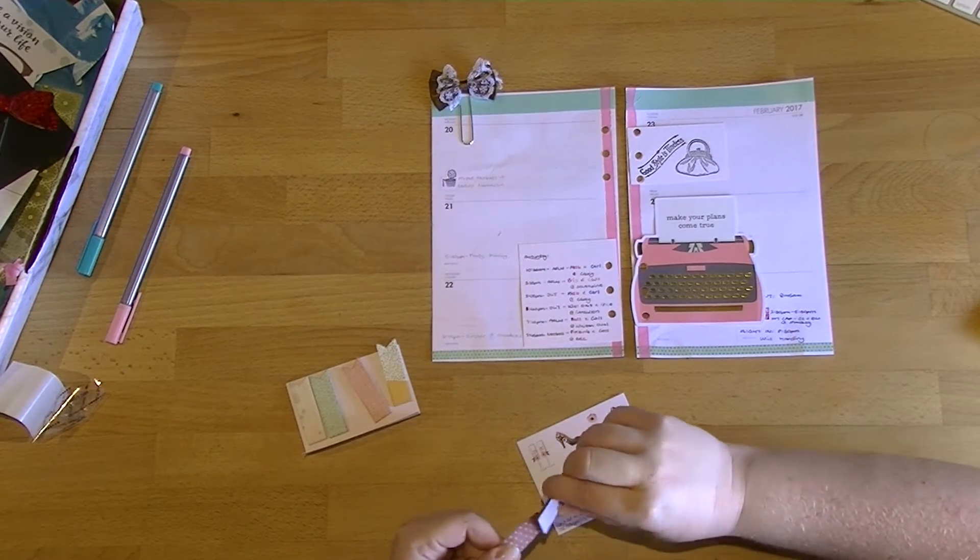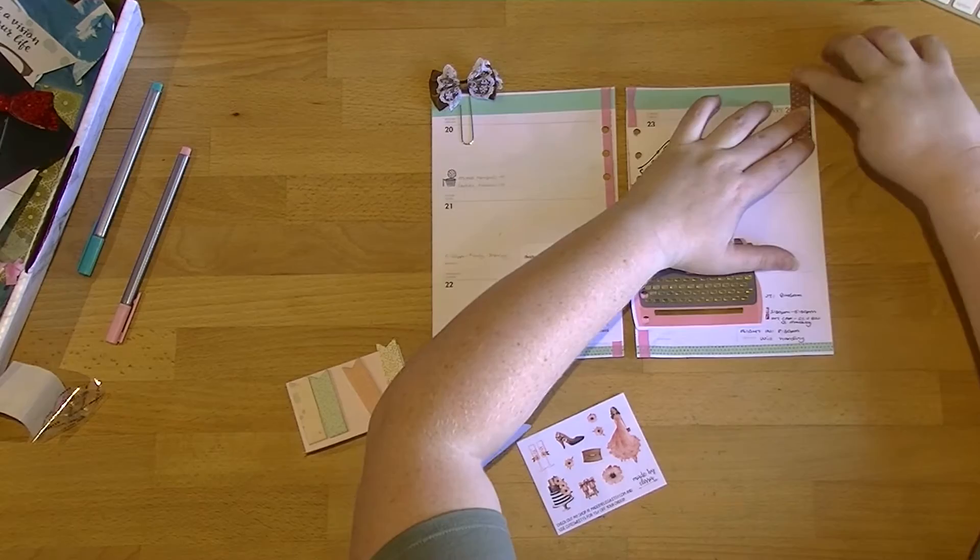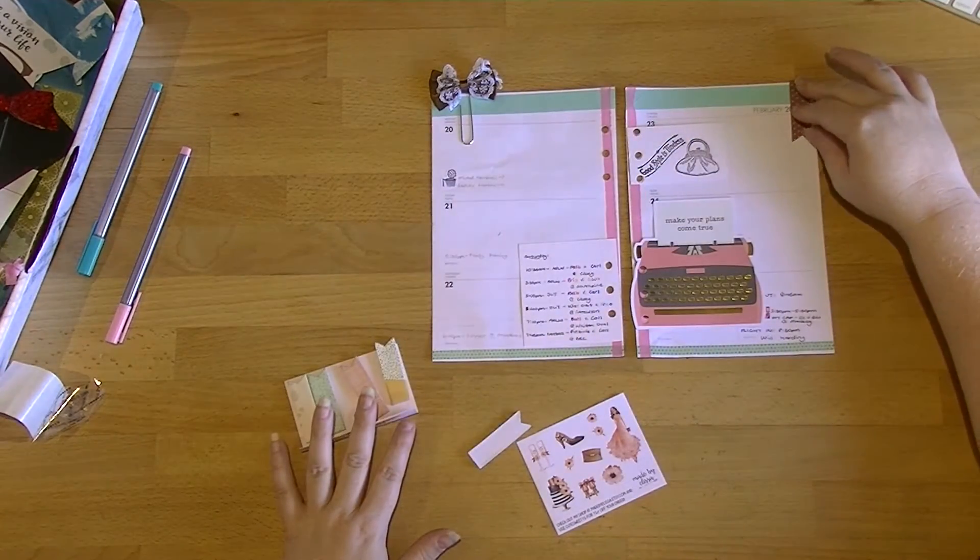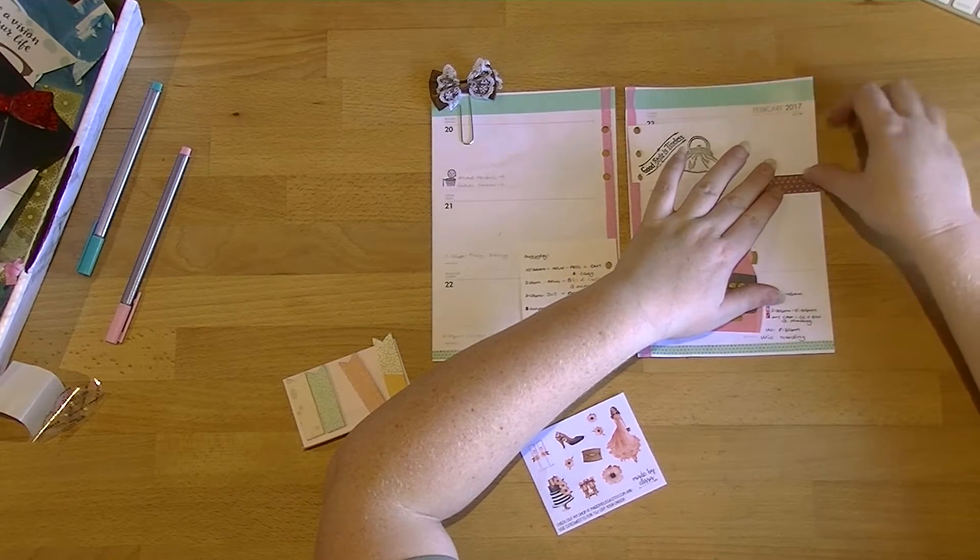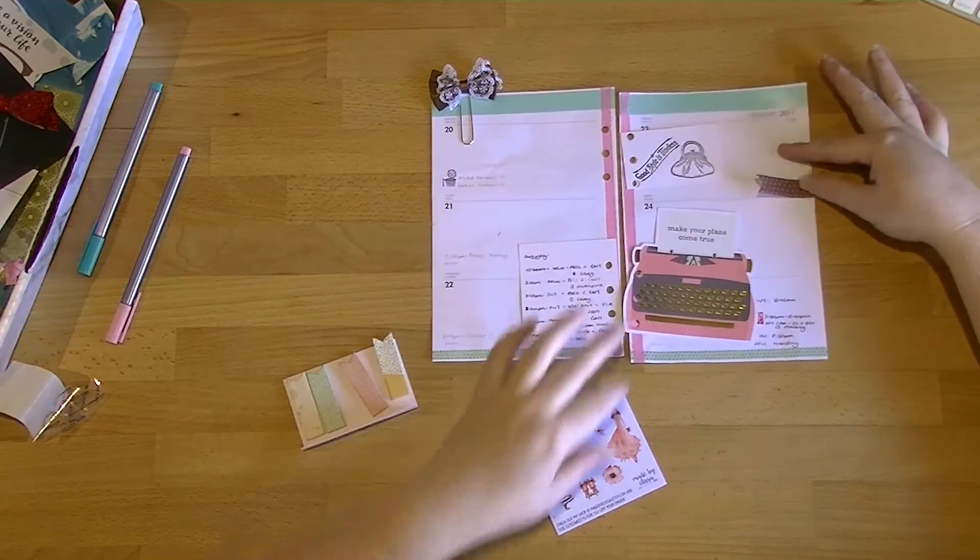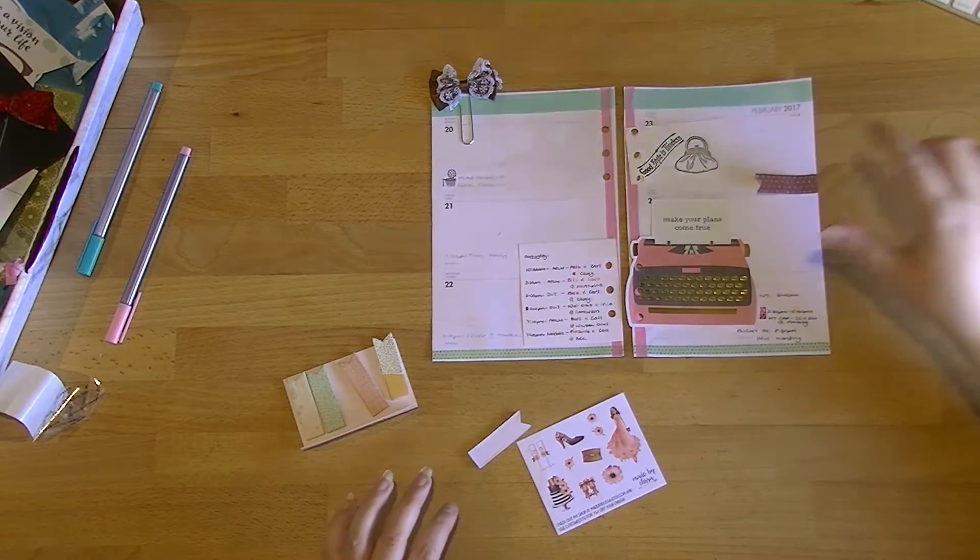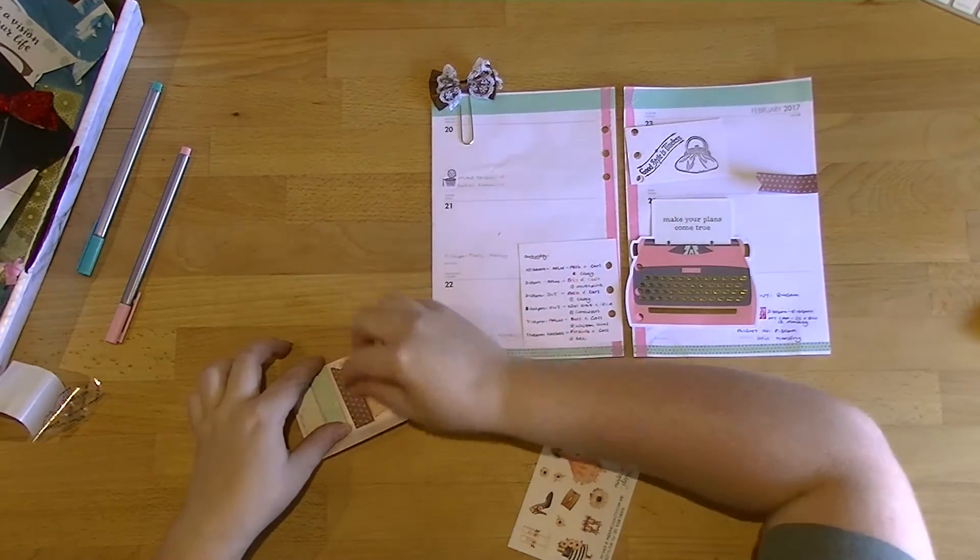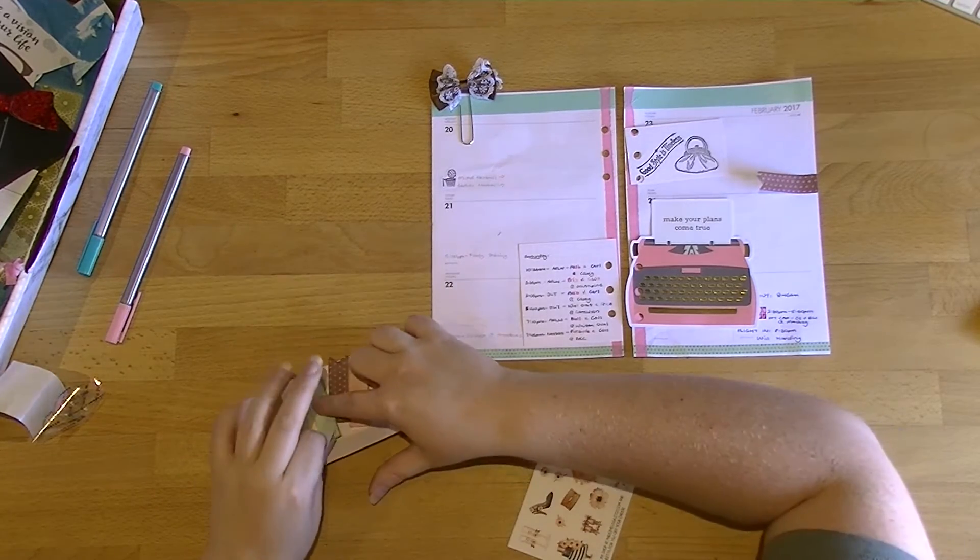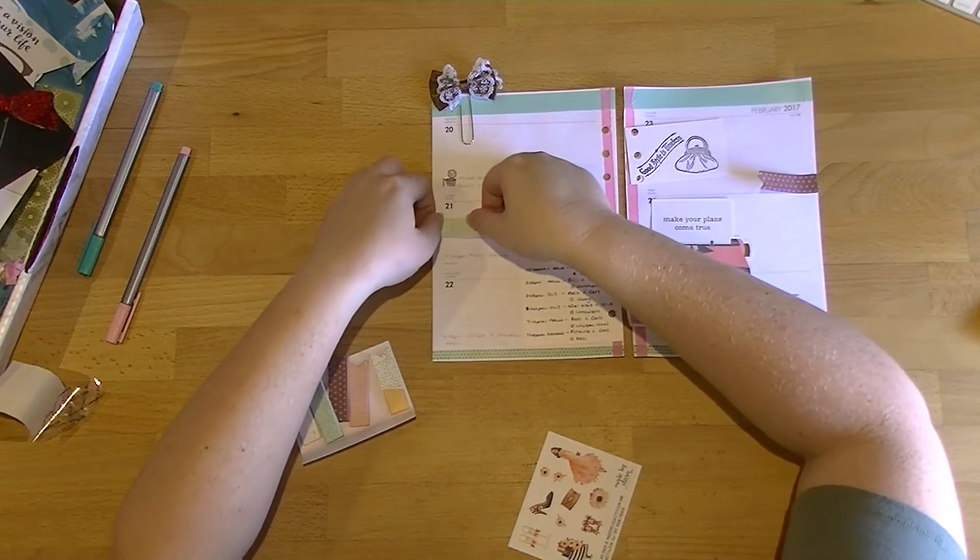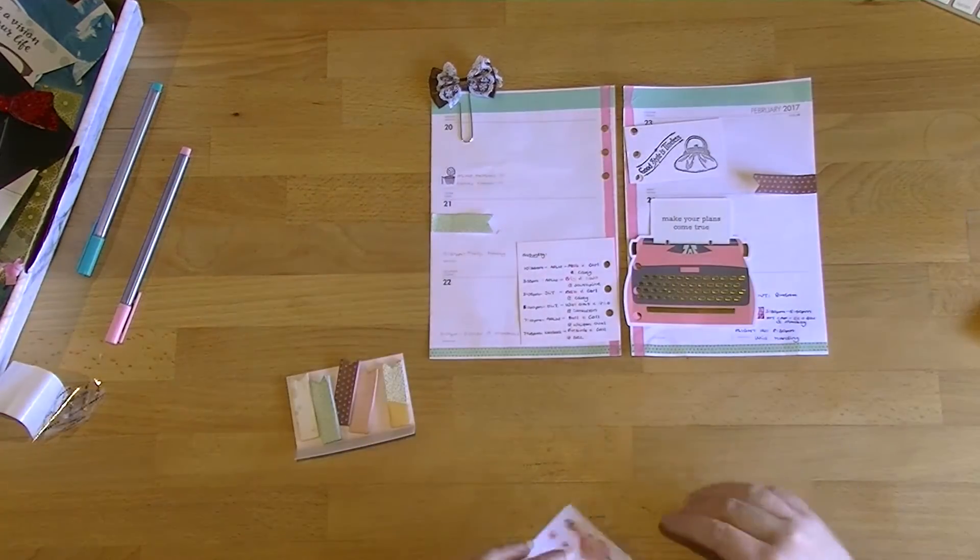I'm going to use some of these page flags. I'm just going to put this down the side here. I'll stick it down properly with glue tape in just a second. Just to see where it looks good first. I kind of want to put that there. I don't know why, I just think it looks cool. I'm going to grab a green one on the other side just to tie the two sides together. I'll put that one there.